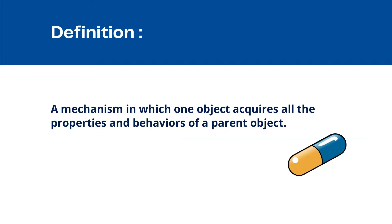We can achieve inheritance by using the keyword `extends`. So the syntax is: `class ChildClassName extends ParentClassName` — the child class will then inherit the properties of the parent class. In an interview you also need to mention the types of inheritance: single, multi-level, and hierarchical.